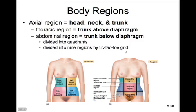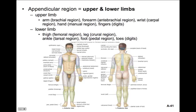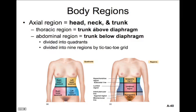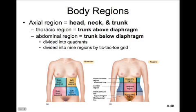Now let's look at some body regions. The body is divided into two basic regions: the axial region and the appendicular region. The axial region includes the head, neck, and trunk, divided further into thoracic and abdominal — the thoracic region is the trunk above the diaphragm, whereas the abdominal region is the trunk below the diaphragm. This trunk is divided into either quadrants or regions resembling a tic-tac-toe grid, used to describe where a patient is feeling discomfort — for example, pain in the right lower quadrant might indicate appendicitis.